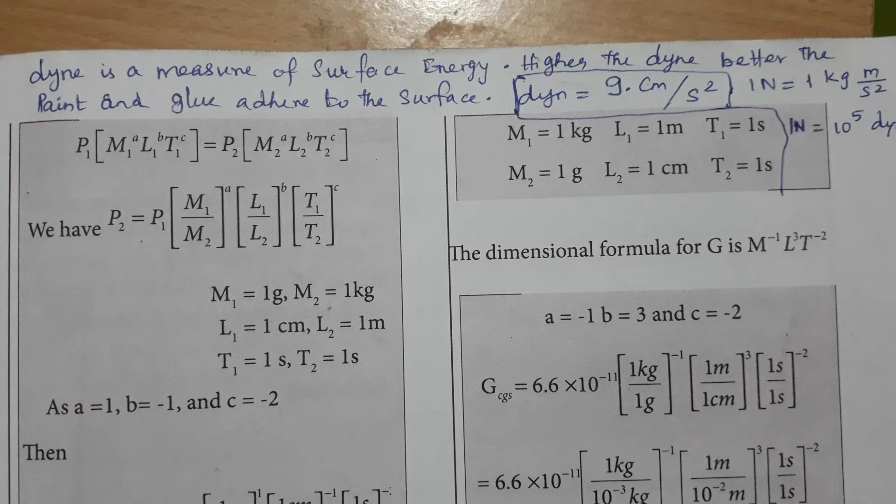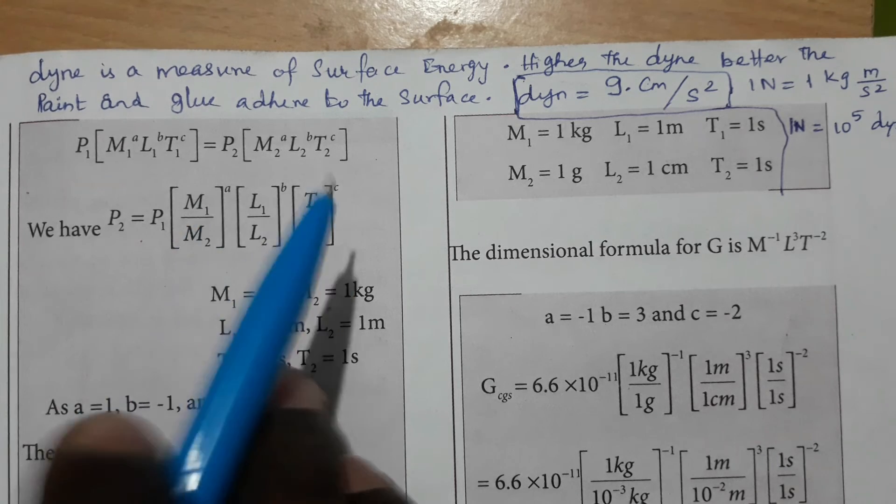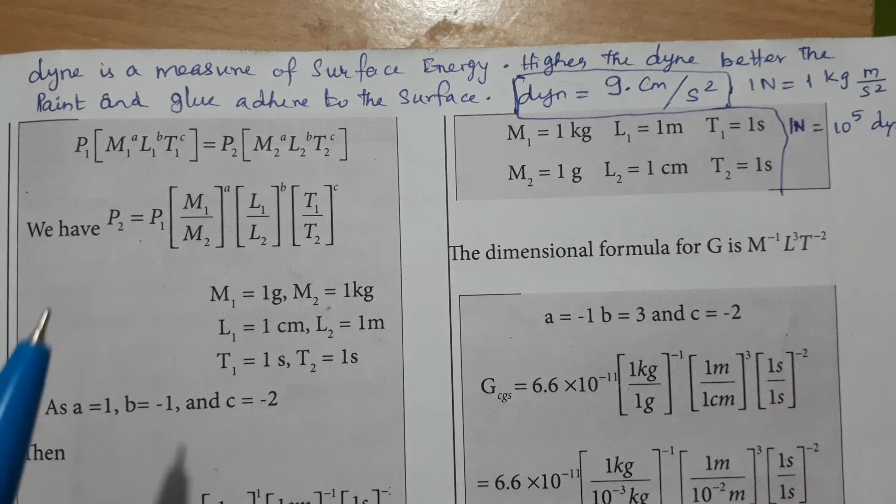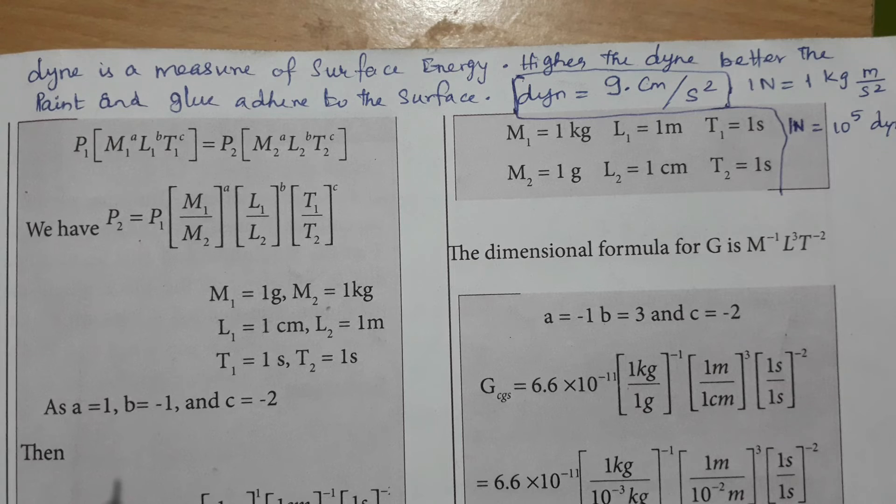So we have to, in order to find out how much a paint adheres to a particular material. Suppose if they paint it on steel or copper, what is the amount of adherence, meaning how much of attachment to the particular surface.